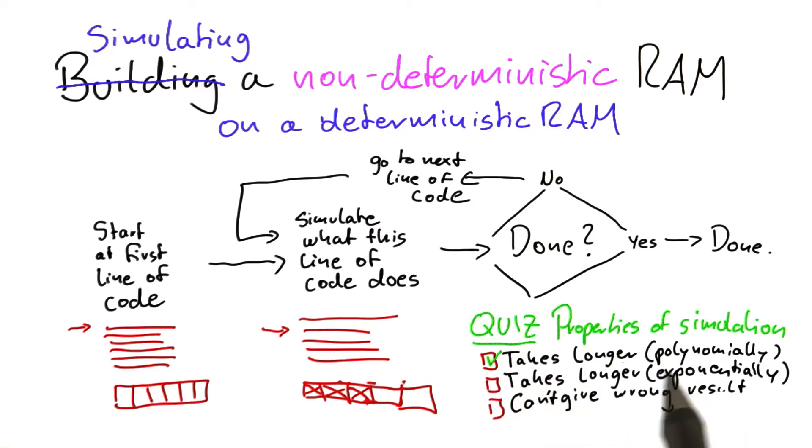Now the reason why it only takes polynomial time longer is that, as I said before, once we're in a certain line of code, this line of code specifies exactly what is going to happen next. So it's mostly an overhead of simulating what this line here of code does. But as we said when we specified the RAM model, each line here is a simple operation. So it takes constant amount of time on the RAM. So I think it's fair to say that it will only take polynomially more time if you simulate what it does.